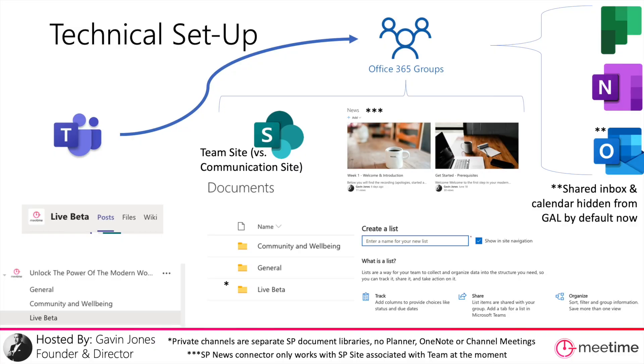In terms of files and folders, when you set up a private channel it doesn't just create another document library — it actually sets up a whole separate SharePoint site. So you get another SharePoint site with another document library and separate pages that you can use in your private channel. This is useful for keeping things private, but if you go to the main team's SharePoint site and try to find that private channel folder, you won't see it there because it lives on a completely separate SharePoint site.